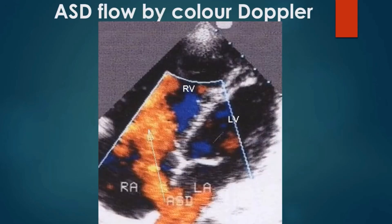Color Doppler flow mapping shows red-colored flow across the atrial septum from the left atrium to the right atrium. The flow is red because it is towards the echo transducer in this view. Flow reversal — a blue-colored jet moving from right atrium to left atrium — can occur when there is severe pulmonary hypertension. Transient right-to-left shunt can occur even without pulmonary hypertension during the Valsalva maneuver. Reverse flow across the atrial septal defect can also be seen in total anomalous pulmonary venous connection.